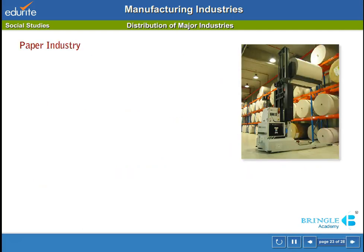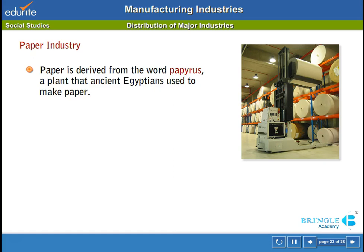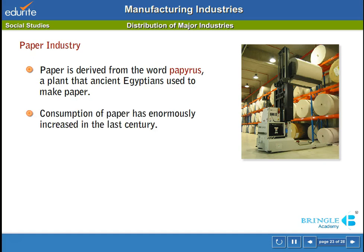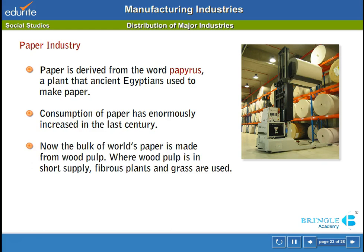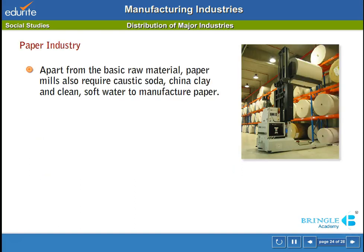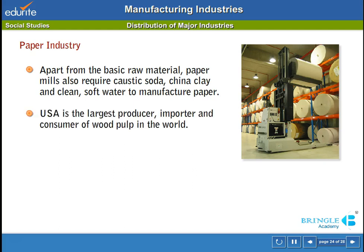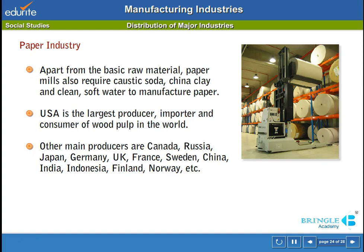Paper industry: paper is derived from the word 'papyrus', a plant that ancient Egyptians used to make paper. Consumption of paper has enormously increased in the last century. Now the bulk of the world's paper is made from wood pulp. Where wood pulp is in short supply, fibrous plants and grass are used. Apart from the basic raw material, paper mills also require caustic soda, china clay and clean soft water. The USA is the largest producer, importer and consumer of wood pulp in the world. Other main producers are Canada, Russia, Japan, Germany, UK, France, Sweden, China, India, Indonesia, Finland, Norway, etc.